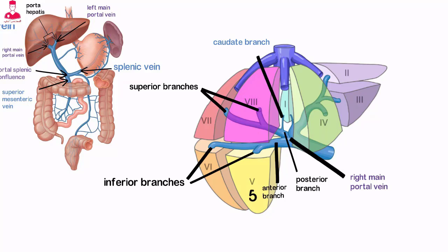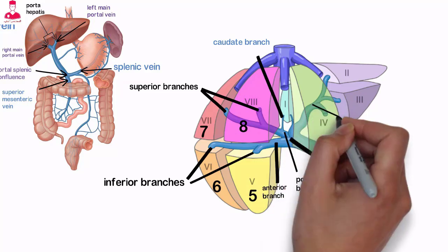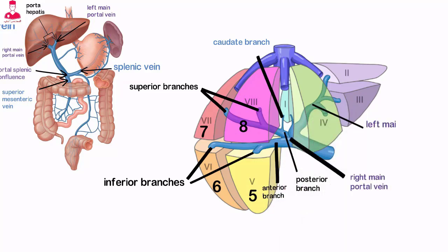The right portal vein supplies segments 5, 6, 7, and 8. The left main portal vein initially courses to the left then turns medially toward the ligamentum teres; it branches to supply the lateral segments (segments 2 and 3) of the left lobe and the superior and inferior sections of segment 4.